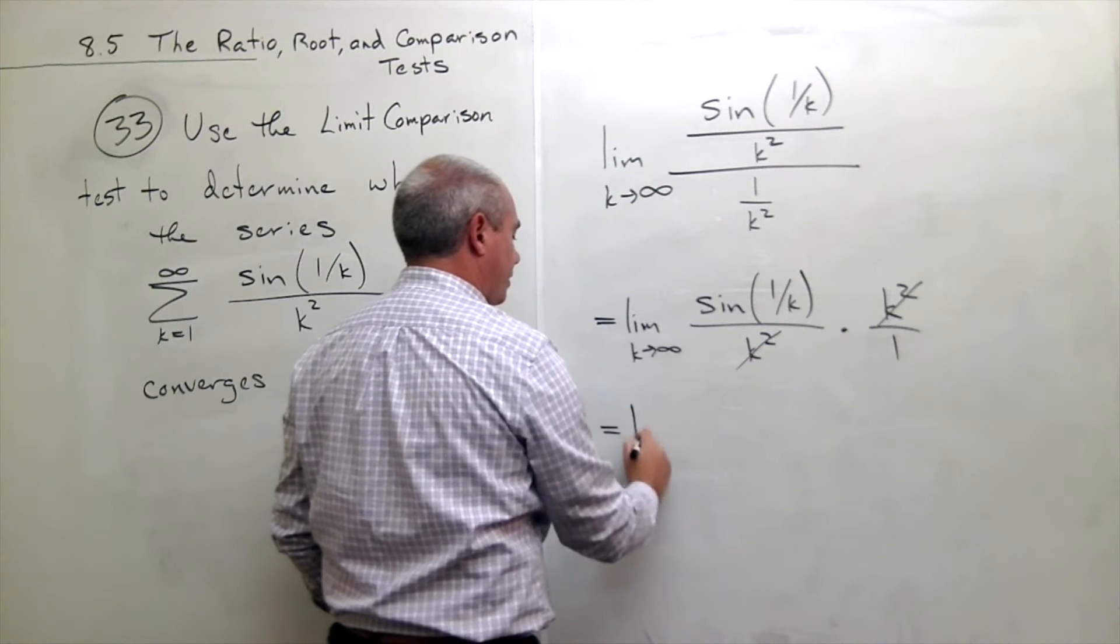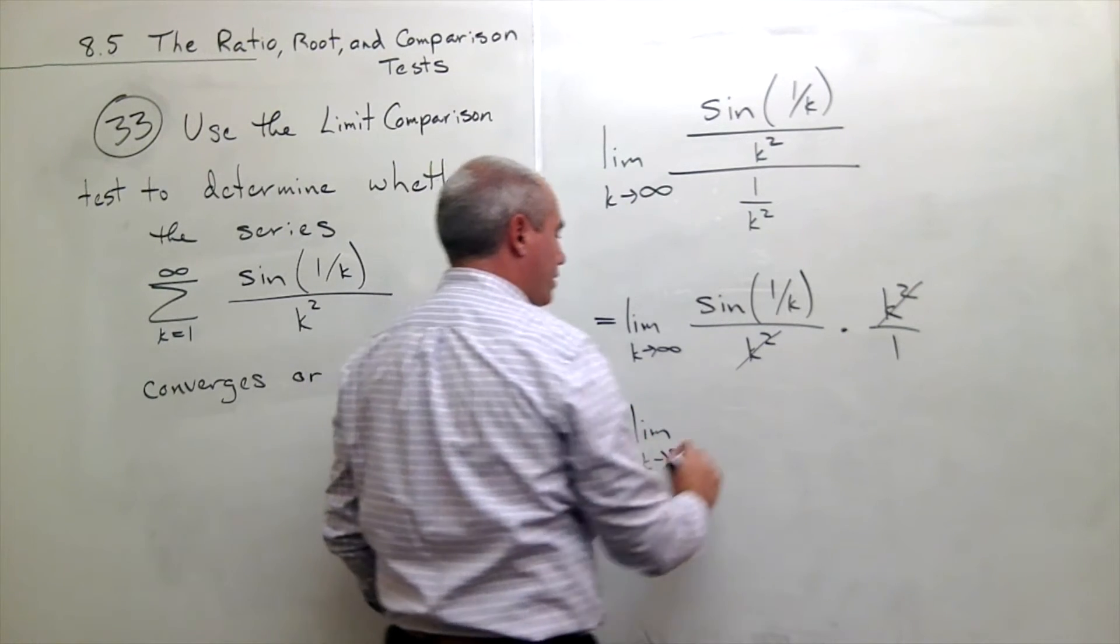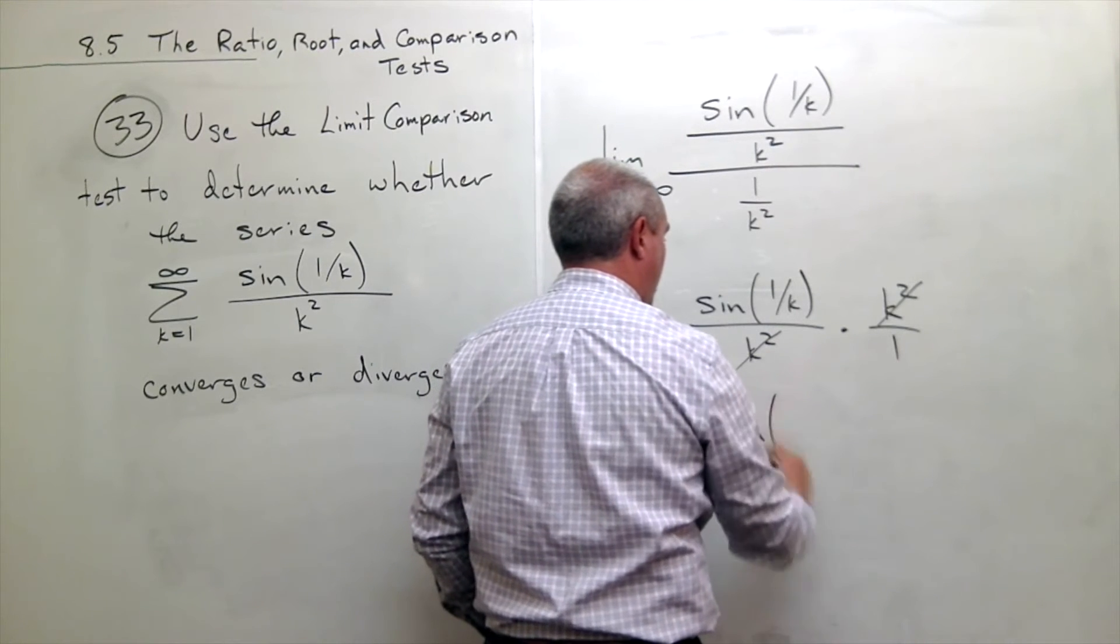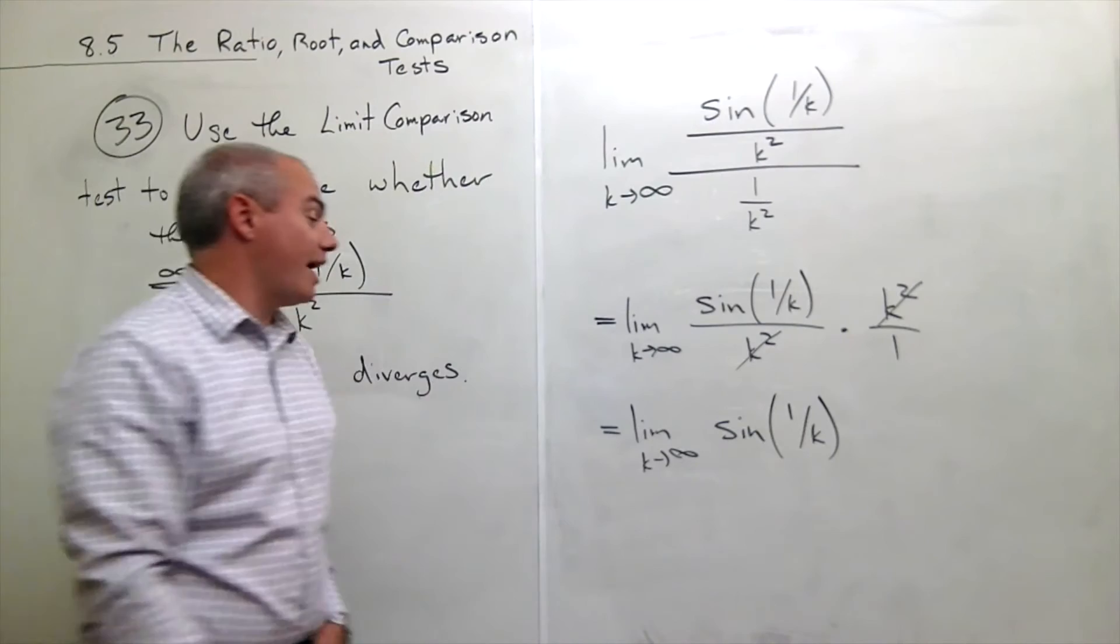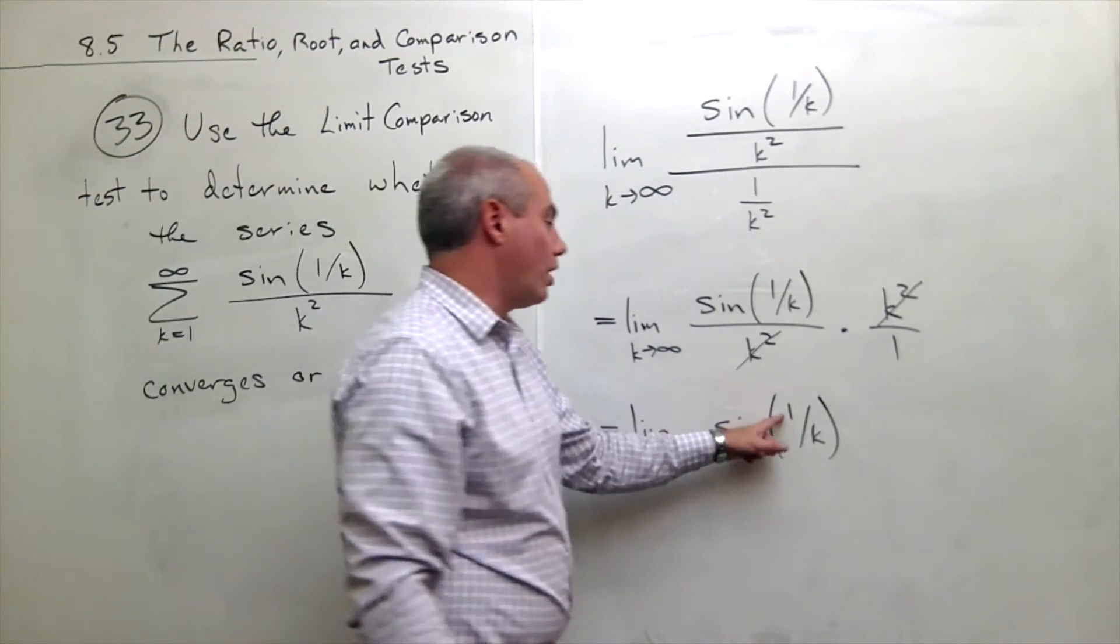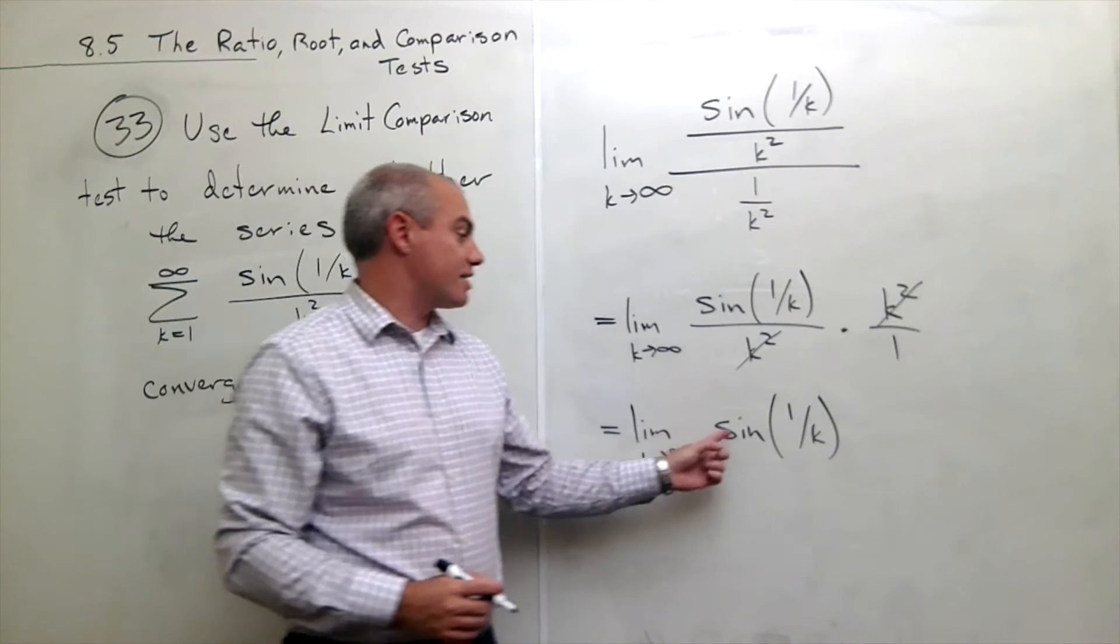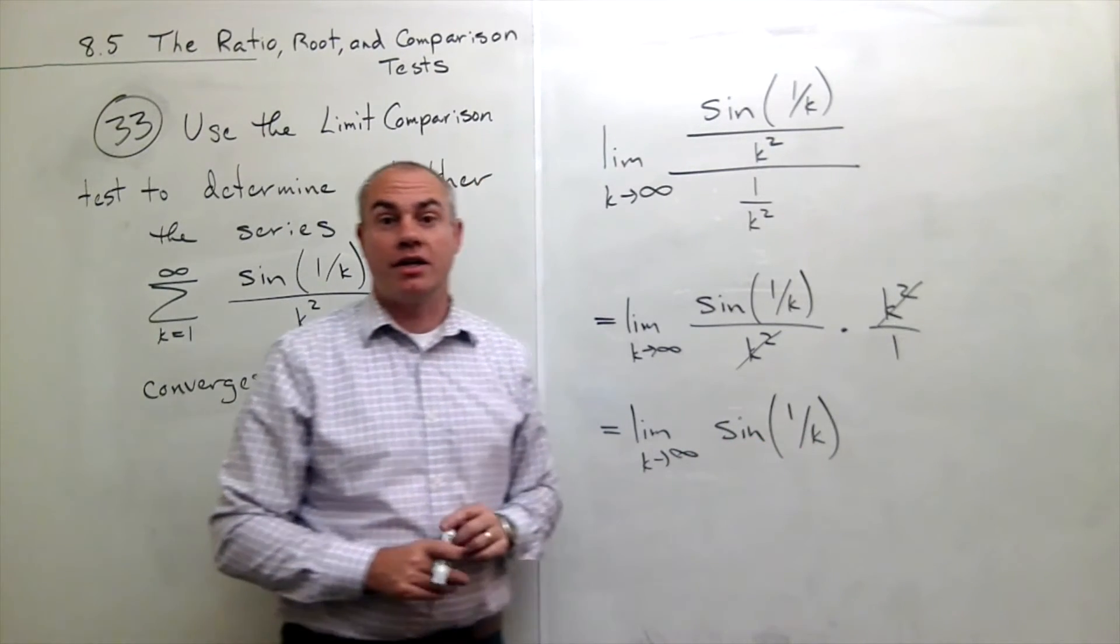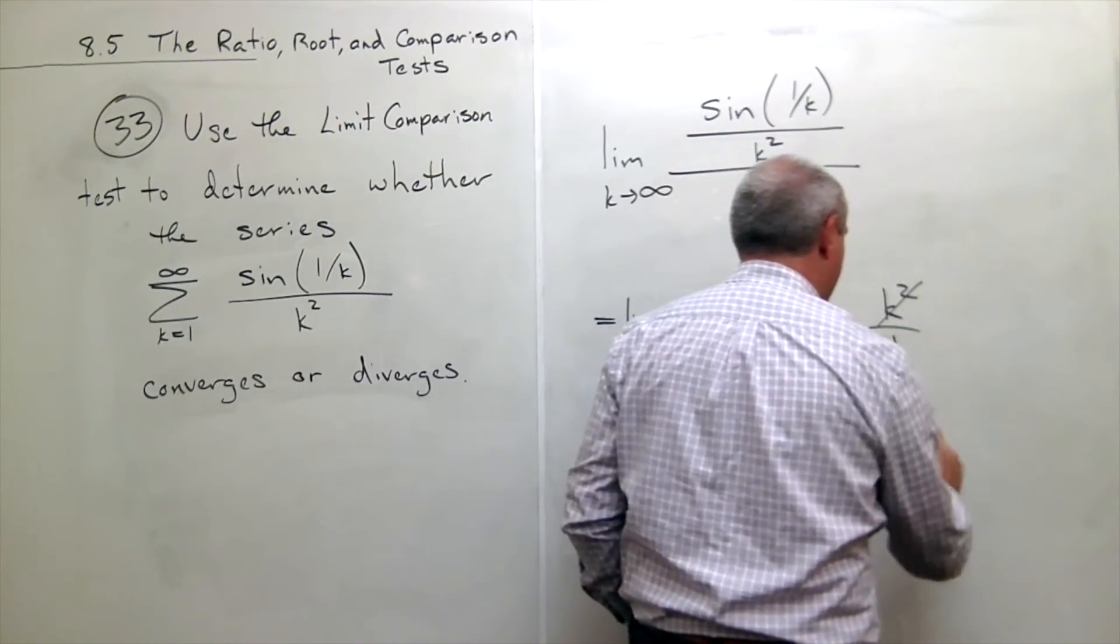And I'm just left with the limit as k goes to infinity of sine of 1 over k. Now, as k goes to infinity, 1 over k gets close to 0. And sine of 0 is 0. So this just ends up being 0.